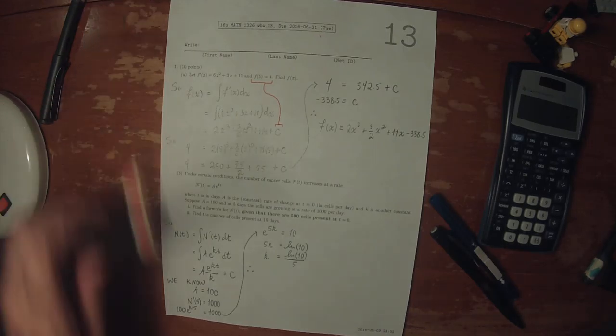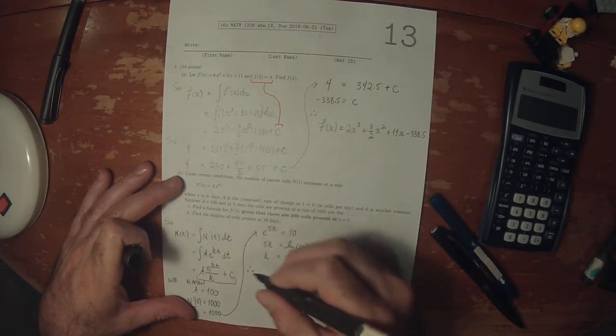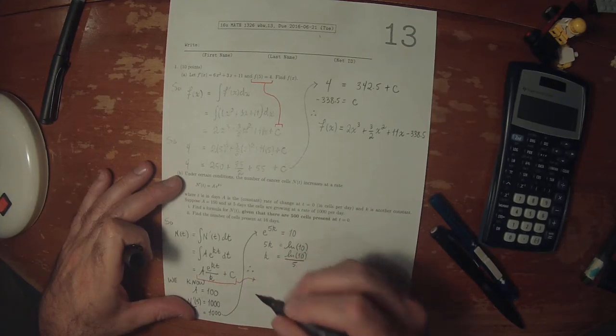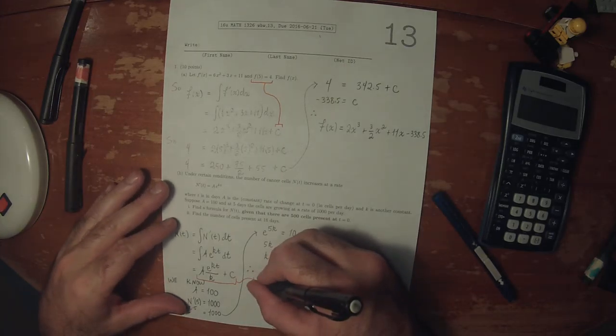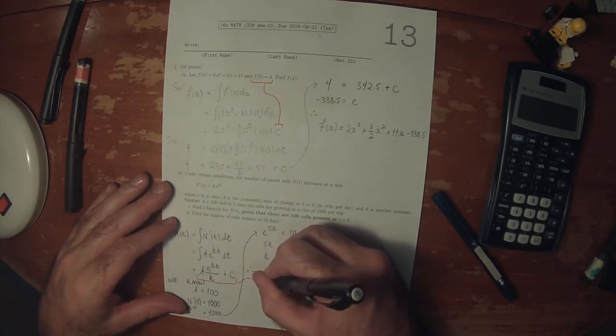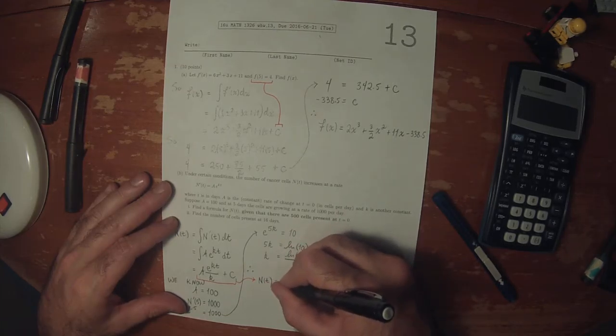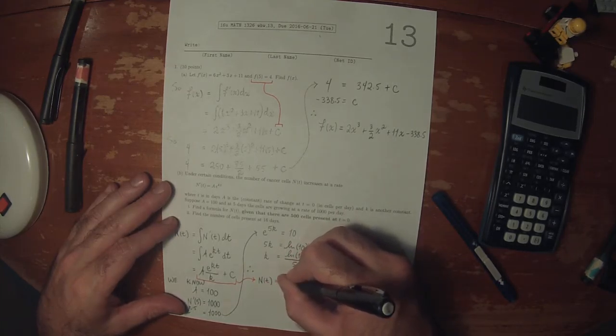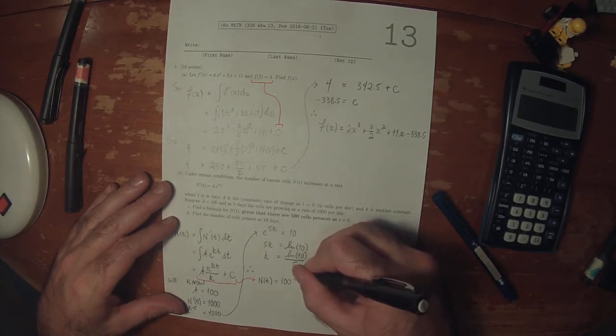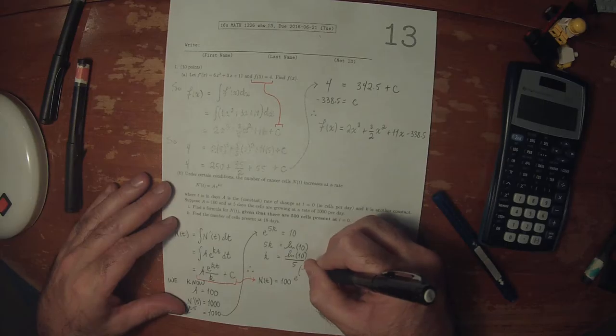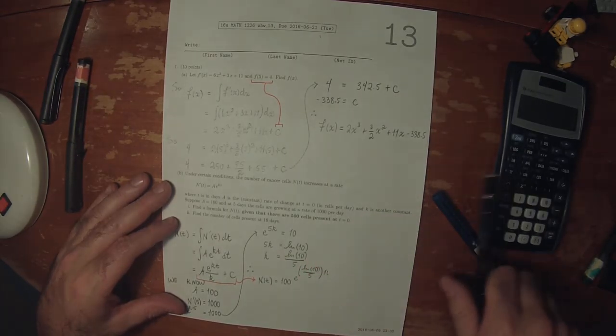Now taking this form and plugging in all of our current knowledge, we know that n of t is 100 multiplied by exponential of log 10 over 5 times t.